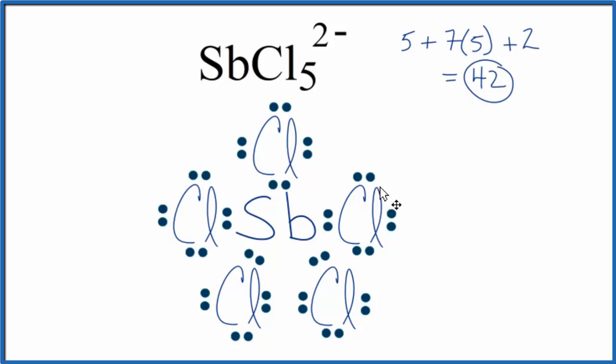So at this point, we've used 40 valence electrons. The Sb has its expanded octet, each chlorine has an octet. We still have 2 valence electrons, and we have to put them somewhere. So we're going to put those on the central Sb. Let's make them a slightly different color, just so we can see them there.